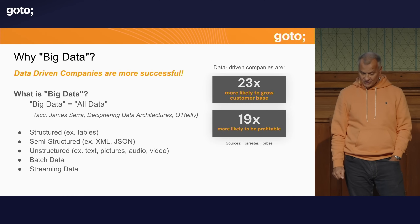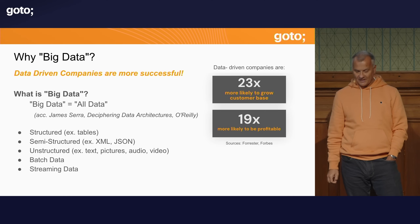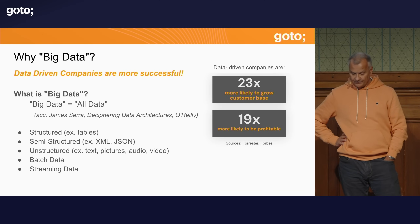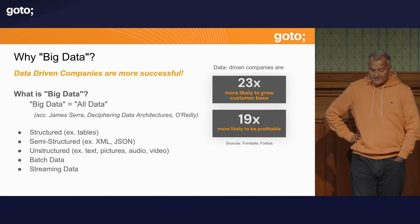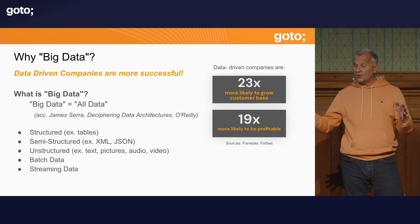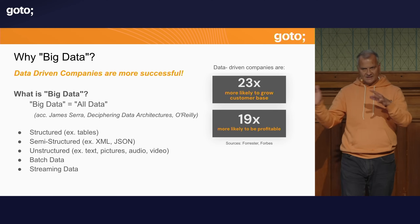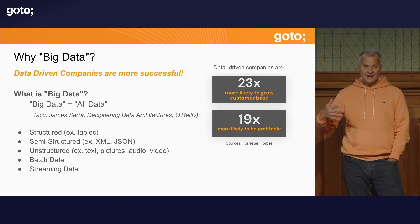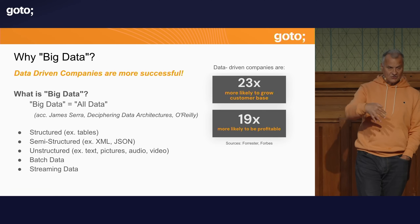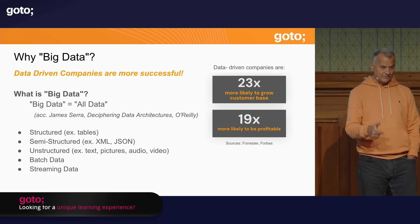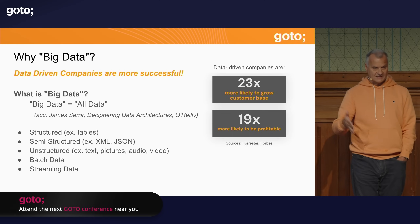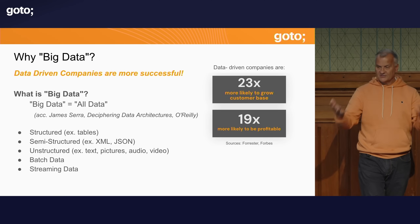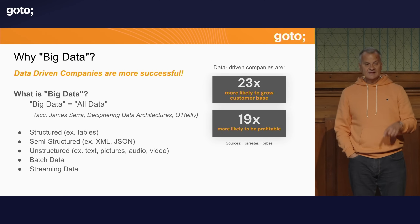I like the definition of James Serra, a system architect at Microsoft who recently released a book on O'Reilly called 'Deciphering Data Architectures' — a book I can recommend. He simply says big data basically means all kinds of data. Twenty years ago, data was mainly tabular data in databases and spreadsheets. Now we have very different kinds: semi-structured data like XML and JSON, unstructured data like text, video, and audio. Data can come in batches or continuously in streams — click streams, sensors, whatever. Big data is dealing with all kinds of data.